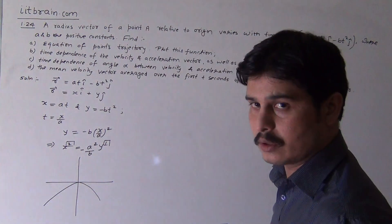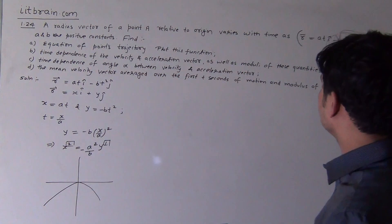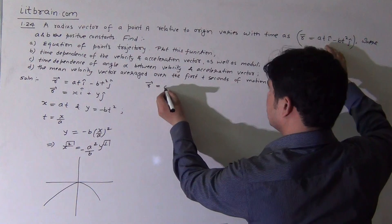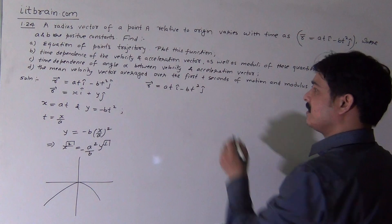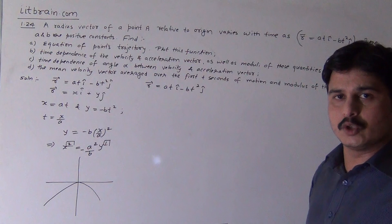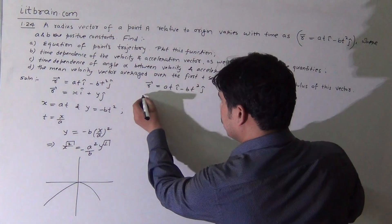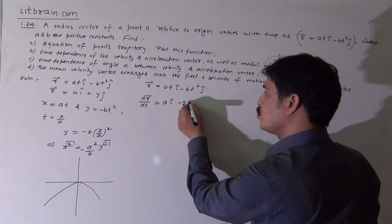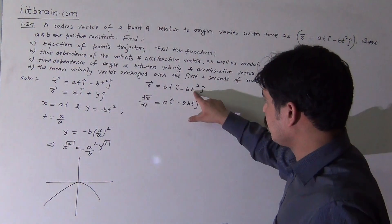For the second part — time dependence of velocity and acceleration vectors and their moduli — we know that dr/dt is the velocity vector and differentiating again gives acceleration. Differentiating the position vector r = at·î - bt²·ĵ gives dr/dt = a·î - 2bt·ĵ, where the derivative of t is 1 and derivative of t² is 2t.